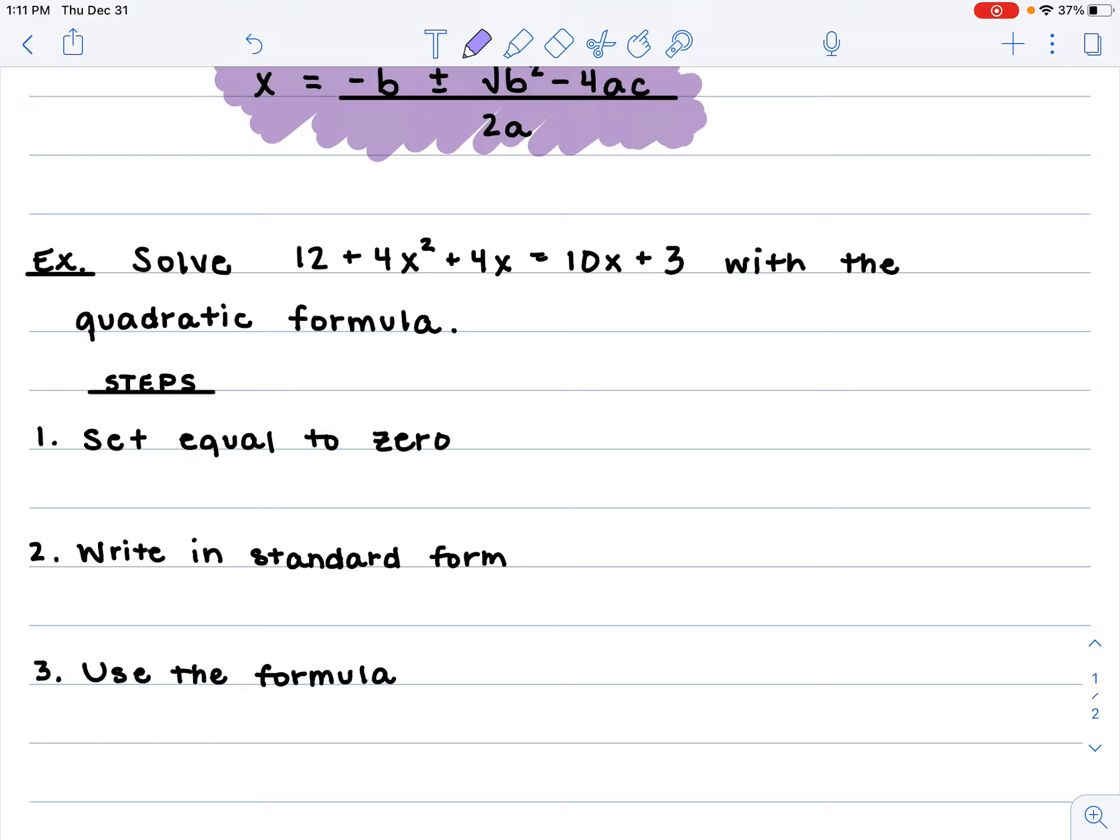So the first one is set equal to 0. We're going to move that 10x over and that 3 over. So I've got 12 + 4x² + 4x - 10x - 3 = 0.